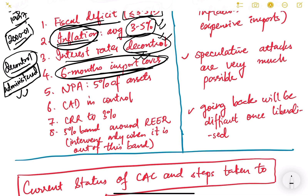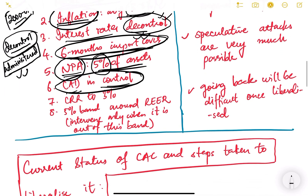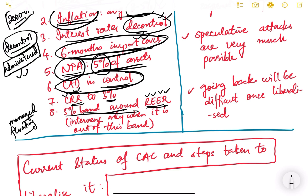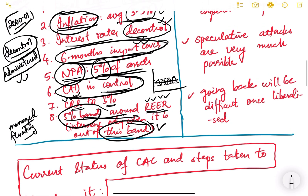Other preconditions included: six months of import cover from forex reserves; non-performing assets of the banking industry below 5% of total assets; current account deficit in control; cash reserve ratio at 3%; and RBI should target the real effective exchange rate with a 5% band — meaning the REER should fluctuate within that band and RBI intervenes only when it goes outside.